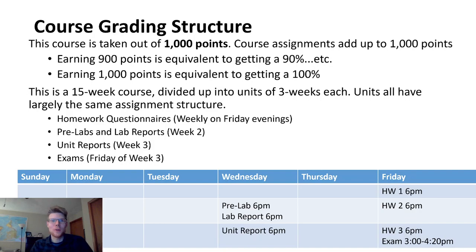I'll also talk about some of the elements of the course, starting with the fact that the course is taken out of 1000 points. Since a 93% corresponds to an A, you would need 930 points at the end of the semester to earn an A. You can also calculate your grade as you go — on Compass, you can see how many points you have divided by how many points total have been graded or posted so far, giving you a sense of your running total.